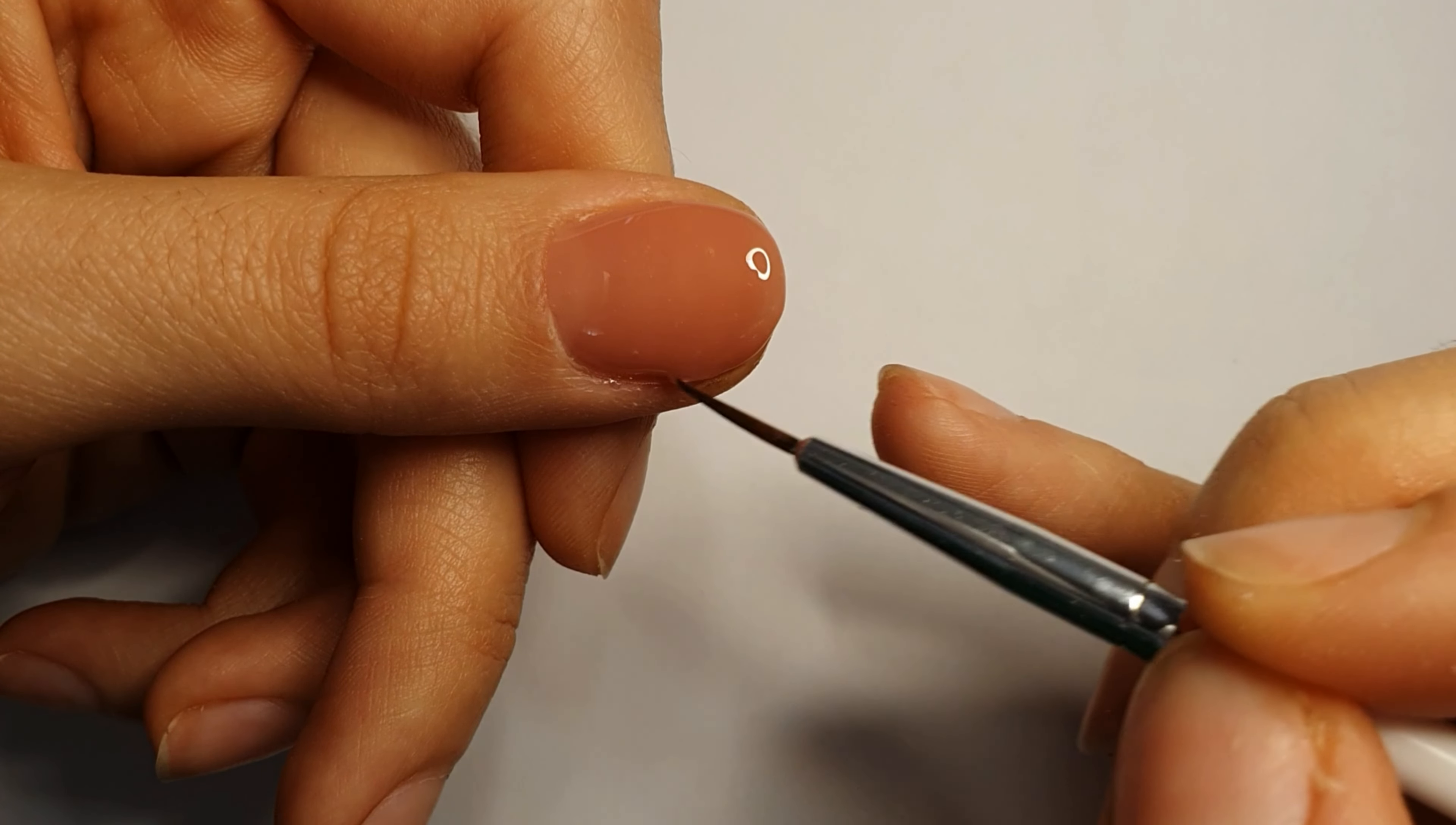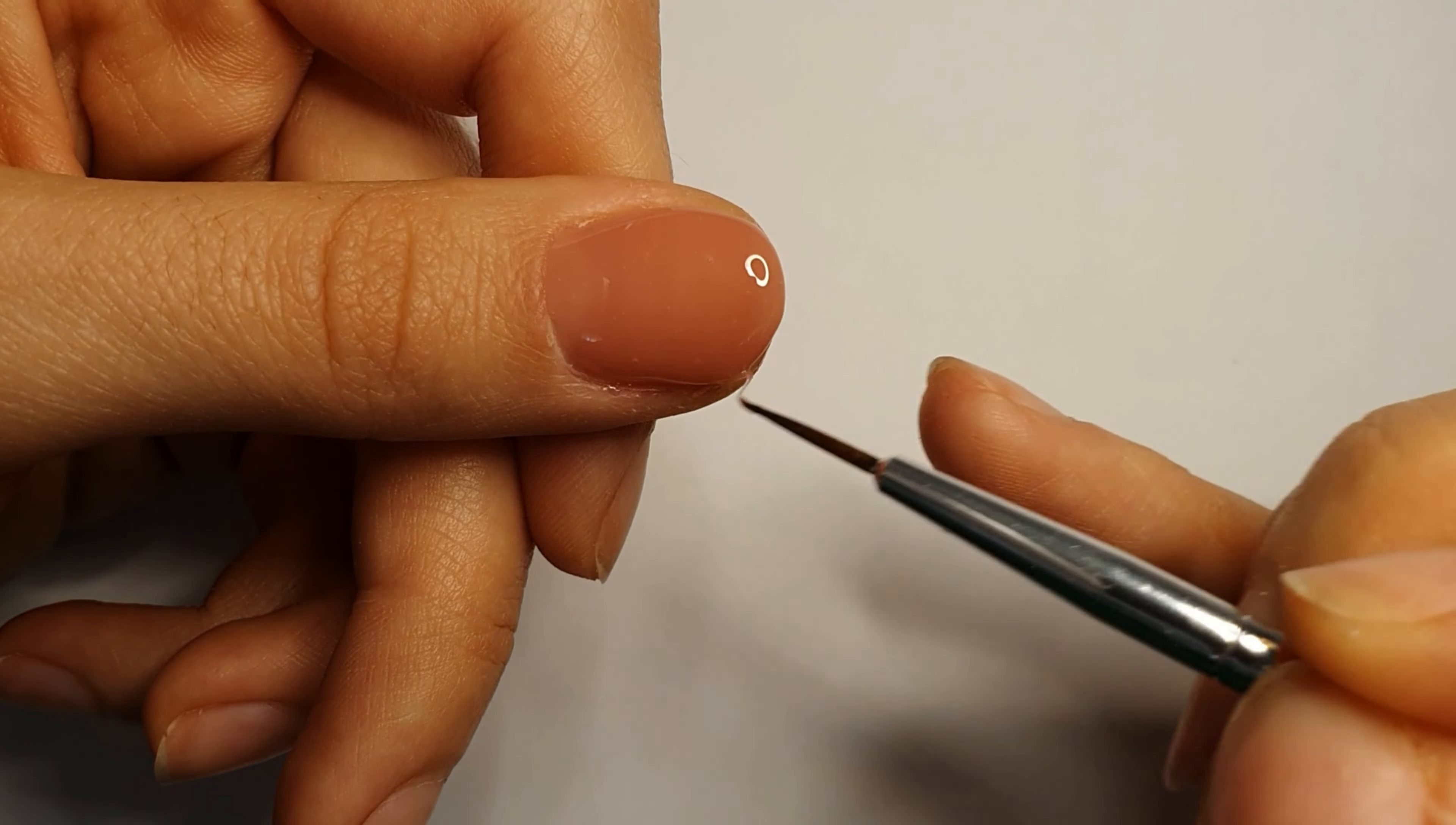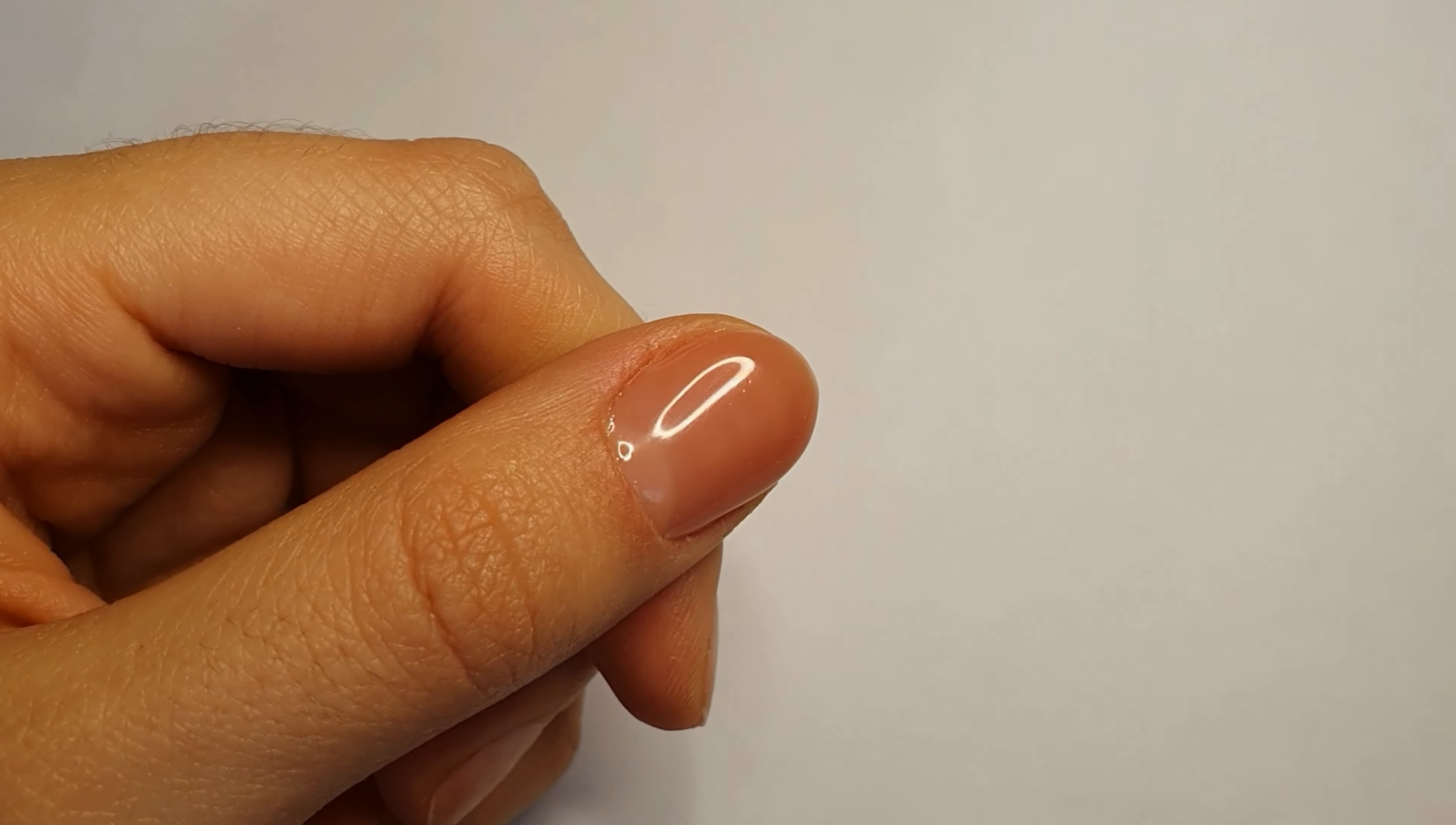Now that I feel like my nail is all done, I'm going to cure it for 60 seconds and then come back. This is my nail after 60 seconds of curing.